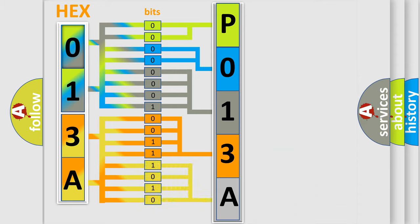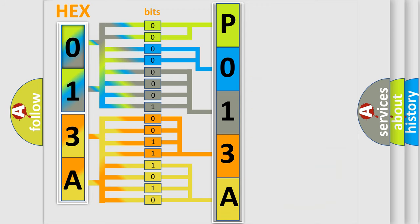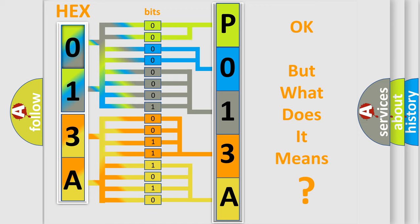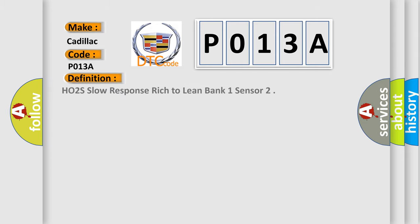A single byte conceals 256 possible combinations. We now know in what way the diagnostic tool translates the received information into a more comprehensible format. The number itself does not make sense to us if we cannot assign information about what it actually expresses. So, what does the Diagnostic Trouble Code P013A interpret specifically for Cadillac car manufacturers? The basic definition is: HO2S slow response rich to lean, bank one sensor.